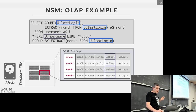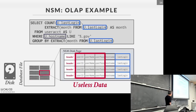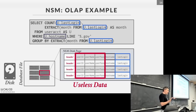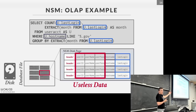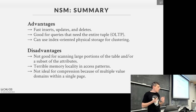The obvious problem is you have to go through all the rows and you've brought in a bunch of data you don't actually need. To get just the attributes I needed, I had to bring in the entire page, which includes user ID, username, user password — attributes I don't need for this query. I'm basically doing useless IO, fetching data from disk that I don't need. In the cloud, you pay per the number of IO operations you're doing for a query.